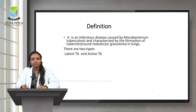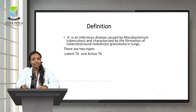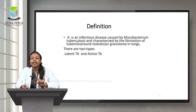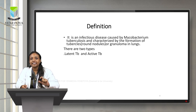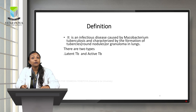We can first define tuberculosis. It is an infectious disease caused by Mycobacterium tuberculosis and characterized by the formation of tubercle round nodules or granuloma in lungs. So it is a bacterial infection. The etiology is Mycobacterium tuberculosis and the significant point is the formation of tubercle or round nodules in the lungs.